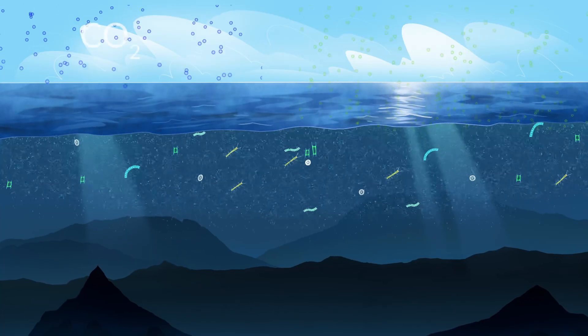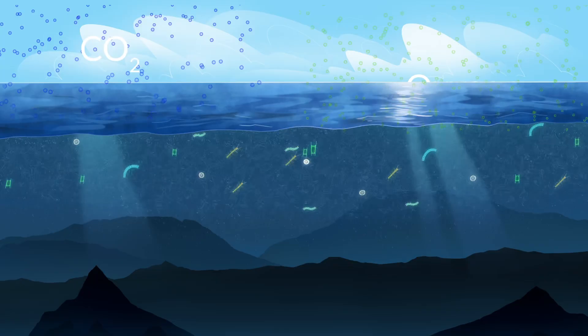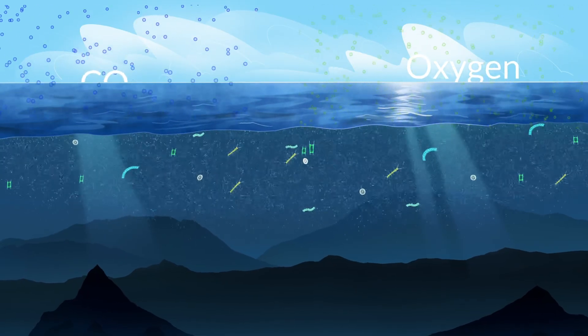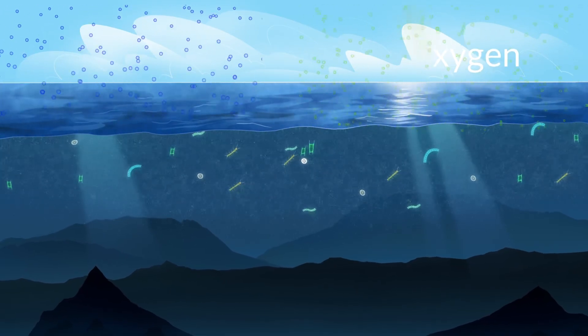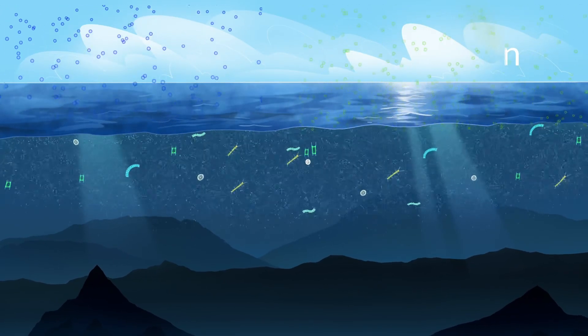The ocean is a primary player in the carbon cycle, regulating the climate. It also absorbs almost half of all carbon dioxide we add to the atmosphere and produces half of the oxygen we breathe.